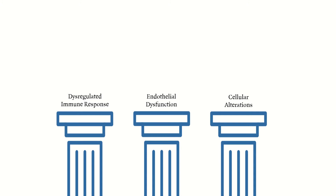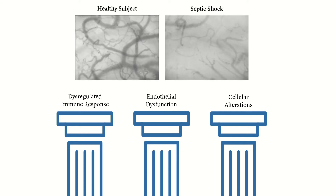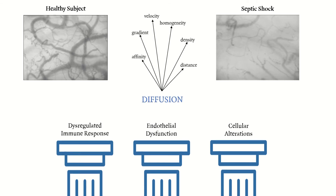So overall, there are three pillars of sepsis and septic shock: dysregulated immune response to a stimulus, endothelial dysfunction, and cellular alterations. All of those lead to a problem at the capillary and microvascular level. Therefore, even though you've optimized the heart, lungs, hemoglobin, and blood pressure, you may still have a degree of organ failure because you're unable to diffuse oxygen to the cells.